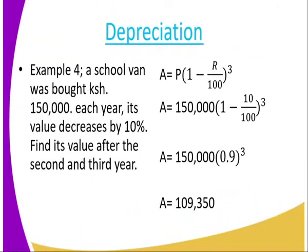We go to depreciation. A coal van was bought at $150,000; each year its value decreases by 10%. Find its value after the second and third year. For the third year, substituting principal and time of 3 into the formula gives $109,350. For the second year, instead of 3 we raise it to the power 2.